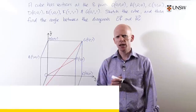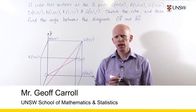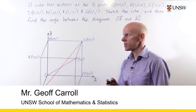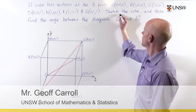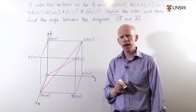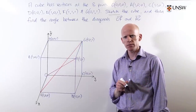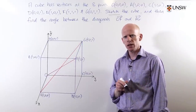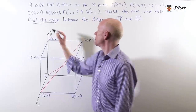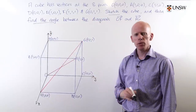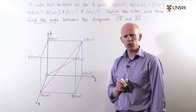This question has two parts. The first part is to sketch a cube given eight coordinates for its vertices. The second part is to find the angle between two given diagonals.